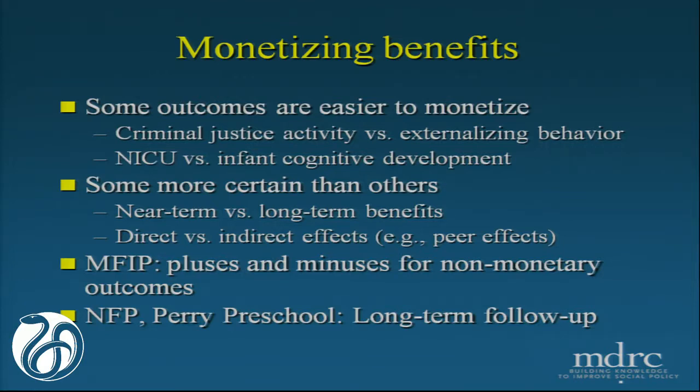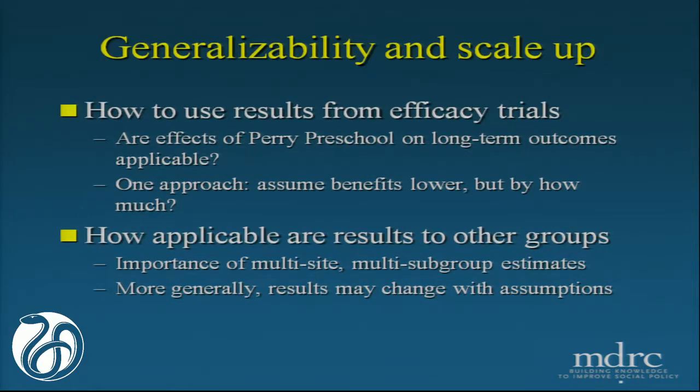What was striking about NFP and Perry Preschool is that they did have long-term follow-ups — they didn't have to project 20 or 40 years, they actually had some results on which to base their cost-benefit analysis, so that made their results a little bit more certain. It has some implications for generalizability and scale-up, which has really been an obsession for people designing studies. If you do a study in one location, can you really generalize it to a wider group? Or if you take a study like Perry Preschool or NFP that was done in really great conditions, what are the implications for putting it into place in much more general circumstances? That would be an area where it would be great to have some standards — how do you use the results from efficacy trials?